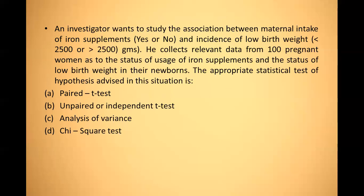Next question: an investigator wants to study the association between maternal intake of iron supplements and incidence of low birth weight (≤2500g). He collects data from 100 pregnant women on the status of iron supplement usage and the status of low birth weight in their newborns. There are two qualitative variables, and the appropriate statistical test to study the association between two qualitative variables is the chi-square test.